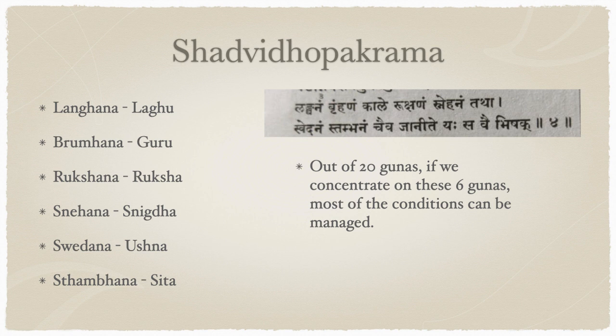Another example: tiktaghrita. When you want to increase vata in the system, the best way is to give tikta rasa, because tiktam increases vata. But vata cannot go beyond control, so we give tiktaghrita — tiktarasa in a ghee medium. In this way vata is under control: it is increased, but in a controlled manner.